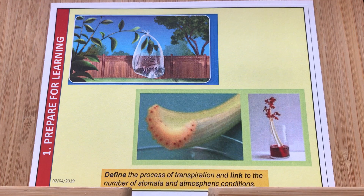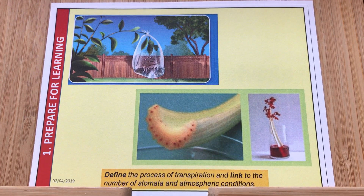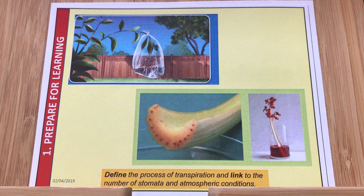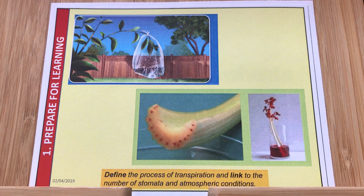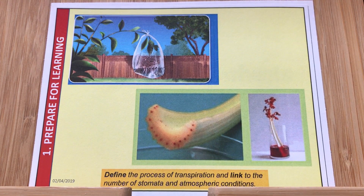We can see from these pictures: if we put a bag over the leaves on a sunny day you could actually collect the water. An apple tree on an average sunny day will release a bath full of water, so there's a lot of water lost through those tiny stomata between the guard cells through transpiration.